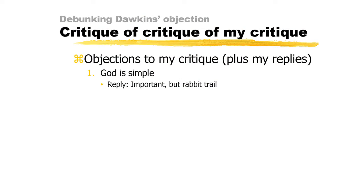At this juncture, two objections might be set out to my critique. First, one might be tempted to argue that God is simple and so the God explanation does not fall prey to Dawkins' objection concerning complexity. In reply, I'll only say this: I think the doctrine of God's simplicity is an important and difficult philosophical and theological doctrine and should be studied for the sake of achieving greater knowledge of God. However, I think that such a project would be lost on the likes of Dawkins and so would have little apologetical value. More importantly, I think it would be a rabbit trail. The fact remains, as I've argued, that whether the designer is simple or complex is not relevant to the question of discerning whether something is designed — whether by God or a God-like being. The issue is merely whether the object or phenomenon or pattern in question displays the marks of intelligent design. The nature of the designer is not part of the significance — it's irrelevant.